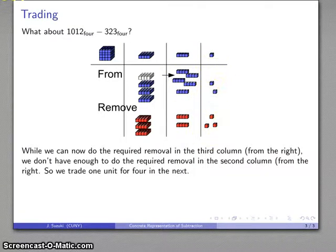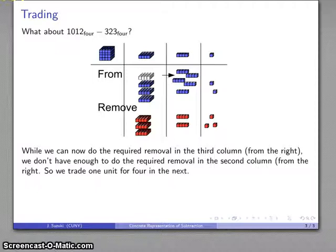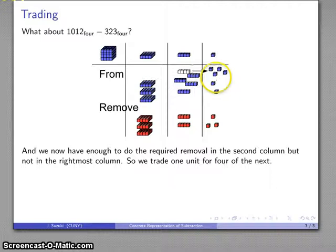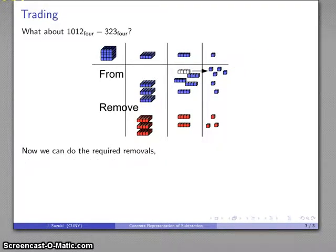But now I still have this problem in the last column. So, again, I'm going to trade one of these for 4 more in the next place over. And, again, this thing that I've traded, that's gone, no longer exists.